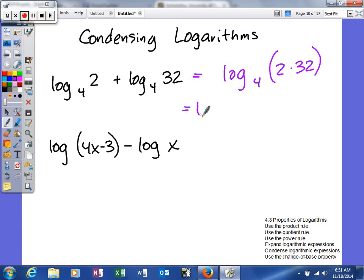And since we can actually multiply those together we'll get log base 4 of 64 and then that can be simplified. So 4 to what power will give us 64? It's 3. So then that would be the condensed logarithmic form.